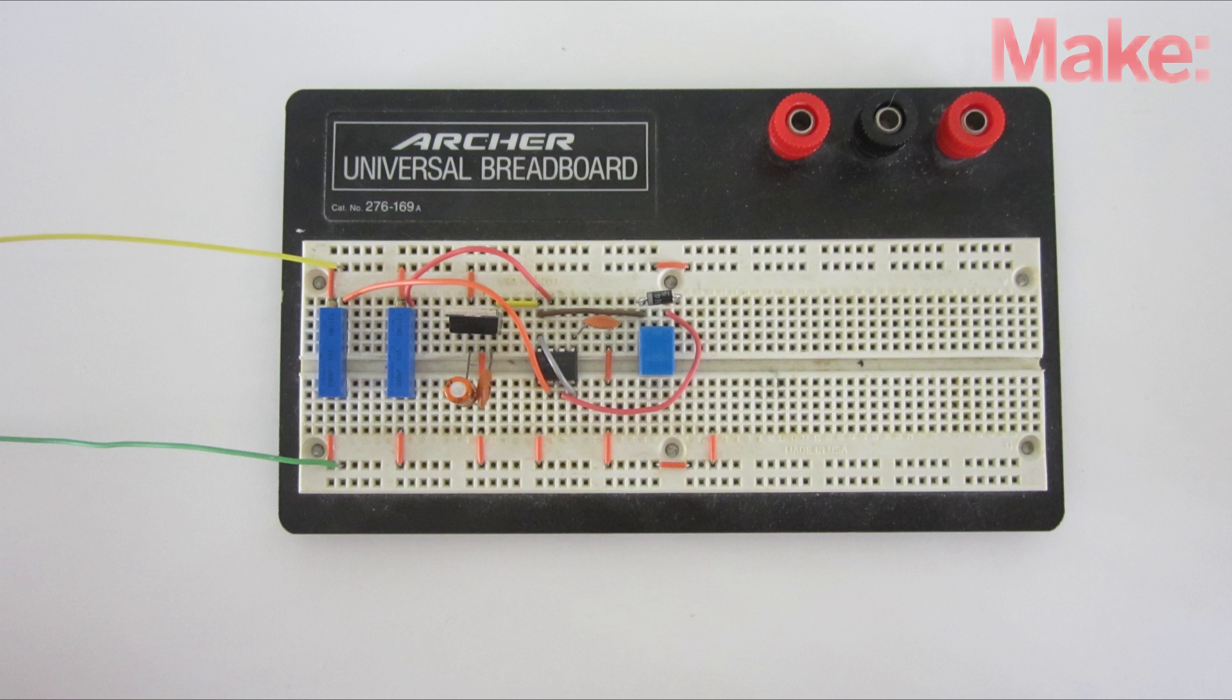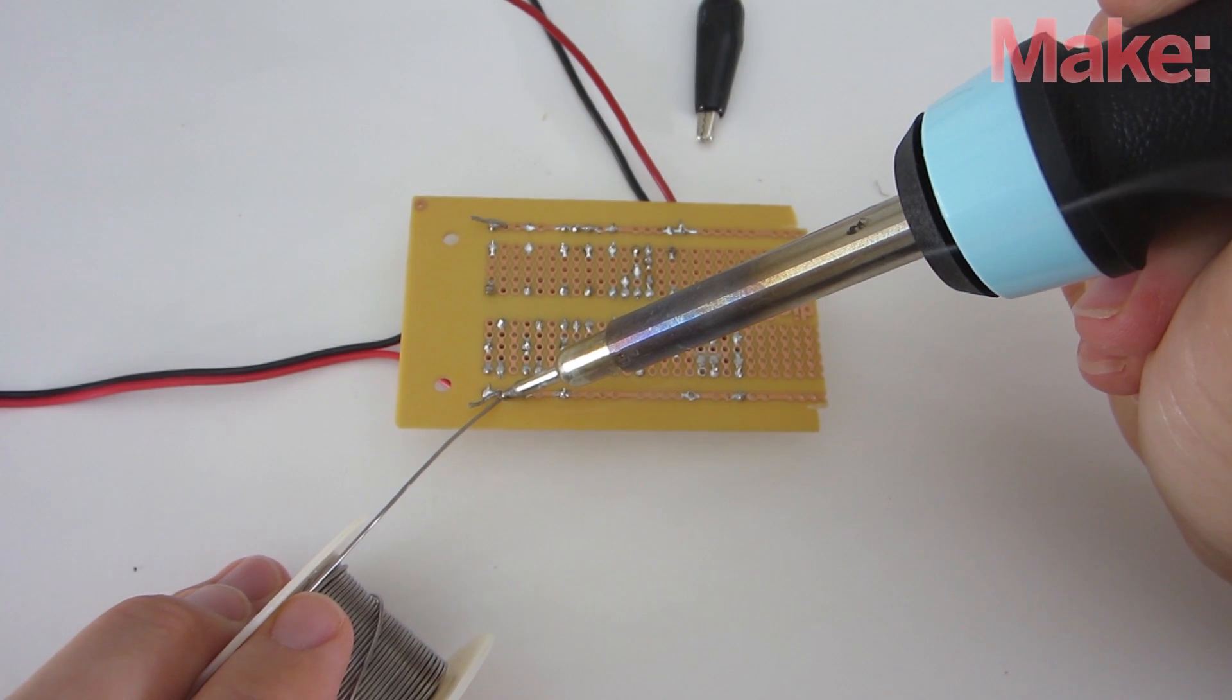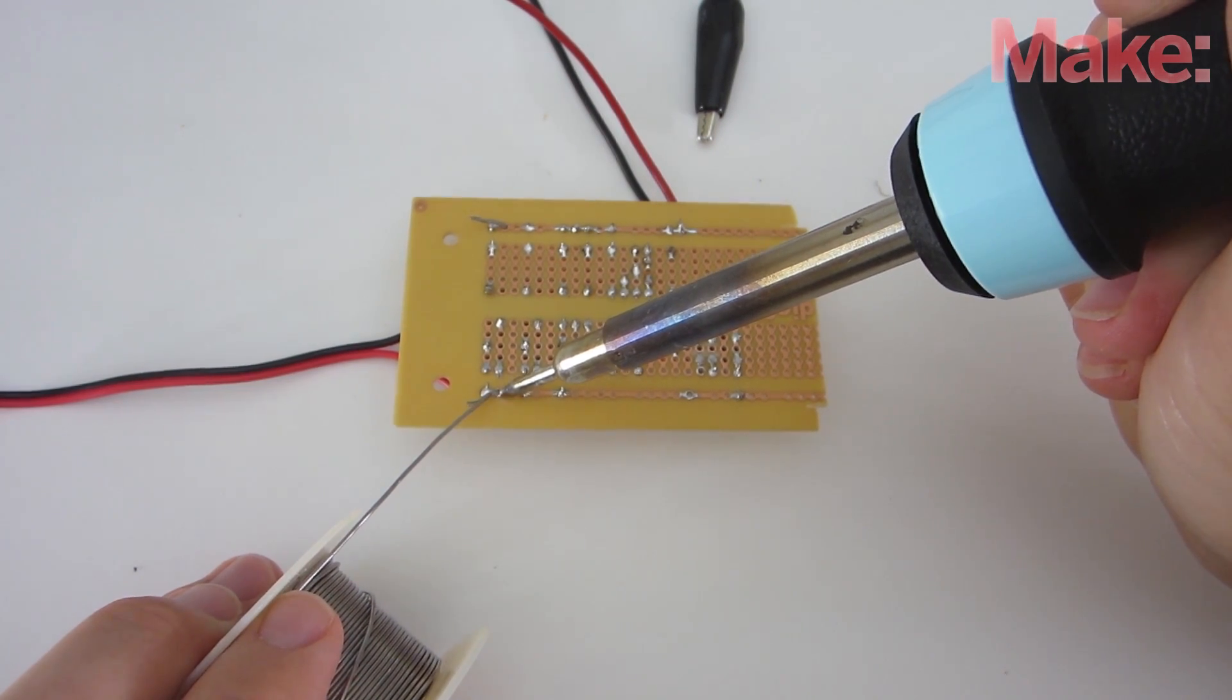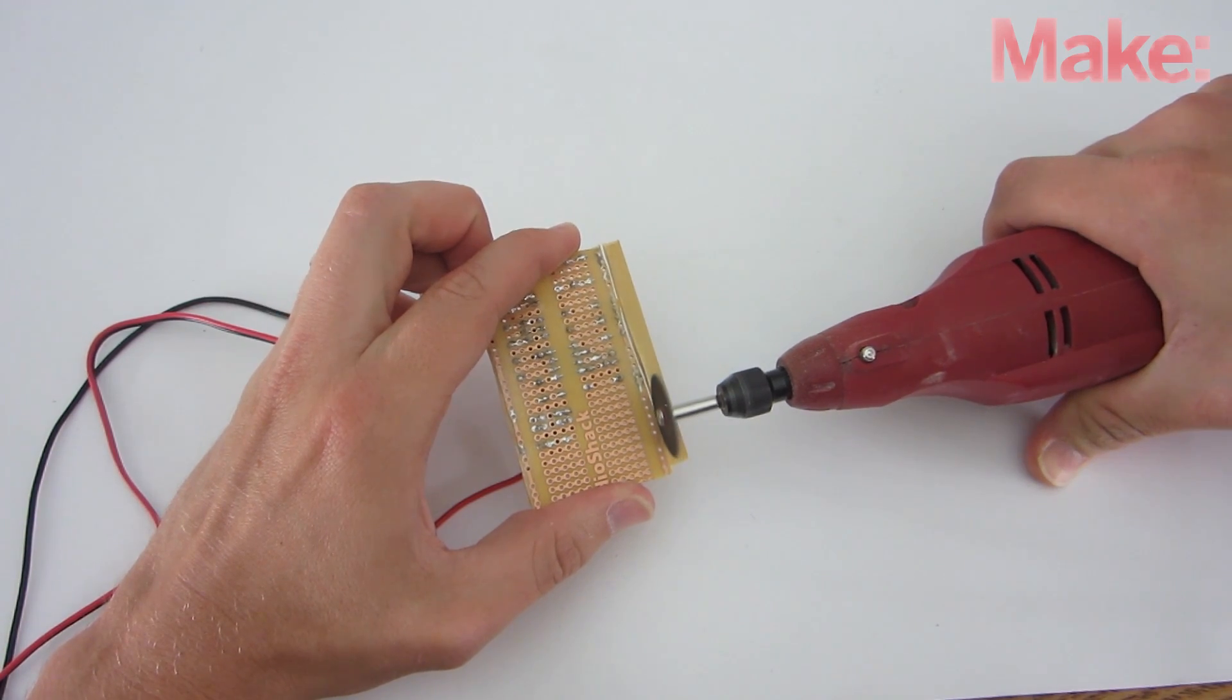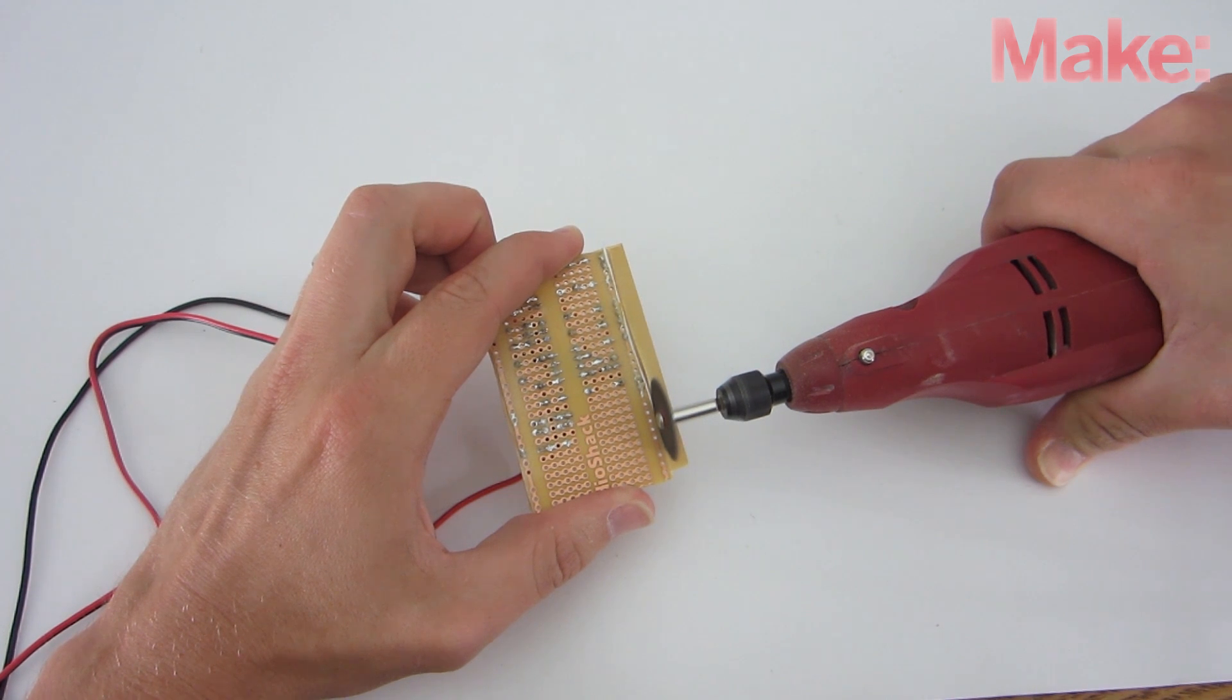First, I prototyped the circuit on a breadboard. Then I soldered the components onto a printed circuit board. I trimmed the sides of the board with a Dremel so that it would easily fit in a small project enclosure.